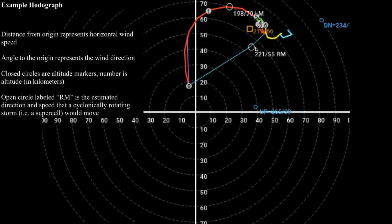This is based on a technique which stems from, I believe it's Bunkers right motion, which is based on a research publication. That's just the most widely used technique for estimating the direction and speed of a supercell.